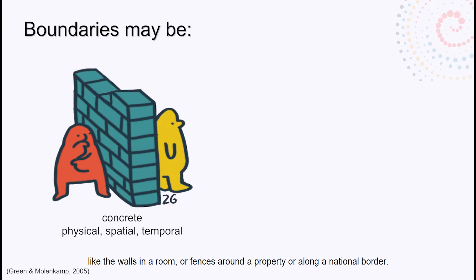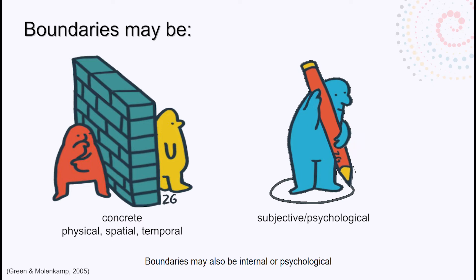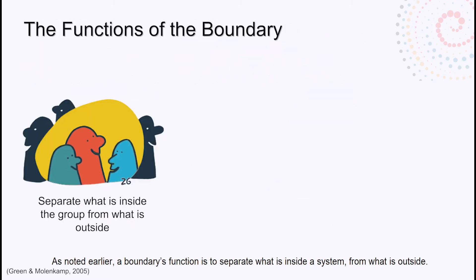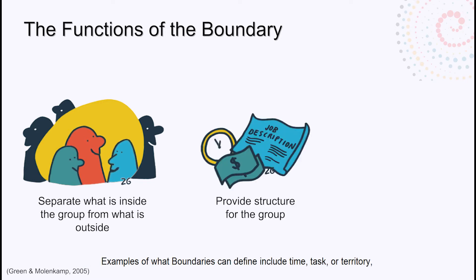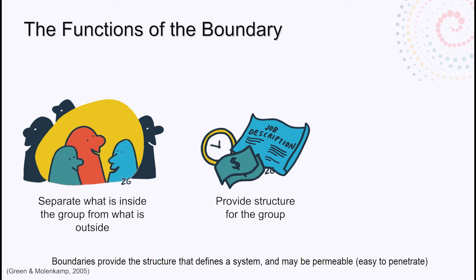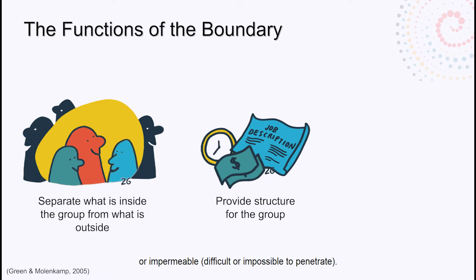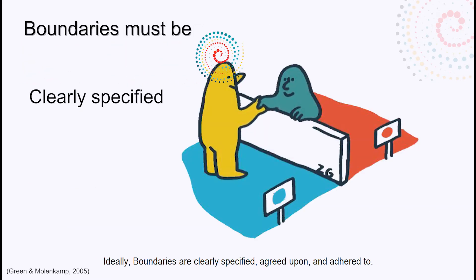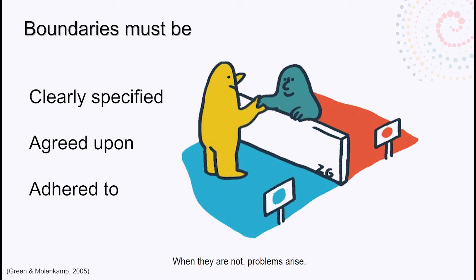Boundaries may be concrete or physical, like the walls in a room, fences around a property, or along a national border. Boundaries may also be internal or psychological and manifest as a sense of belonging or not belonging to a particular group. Boundaries separate what is inside a system from what is outside. They can define time, task, territory, available resources, what roles entail, and what responsibilities we have. Boundaries provide the structure that defines a system and may be permeable or impermeable. They can be seen as the container that holds the primary task — if the container has holes in it, it's too permeable and won't be able to hold the task. Ideally, boundaries are clearly specified, agreed upon, and adhered to. When they're not, problems can arise.